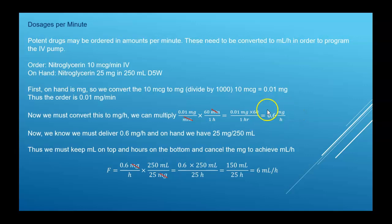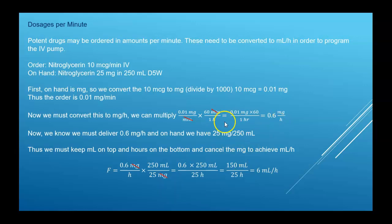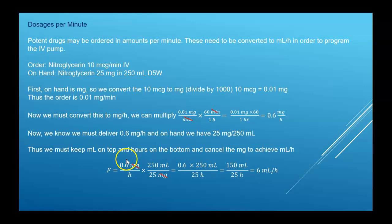Now we have our D rate: 0.6 milligrams per hour. We multiply that by 250 milliliters over 25 milligrams — our concentration inverted so the milligrams cancel. Multiply across the top and bottom, and you have your flow rate in milliliters per hour.